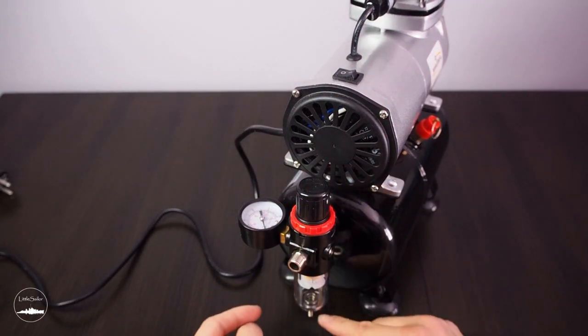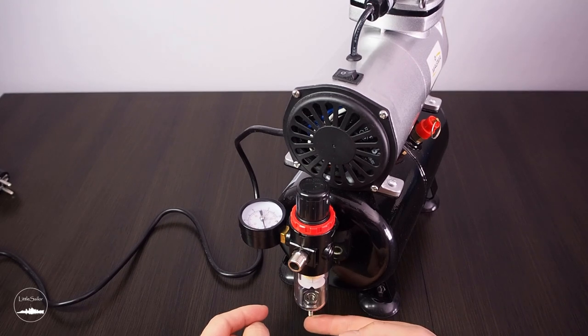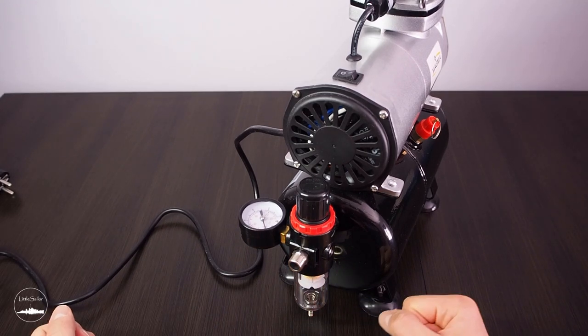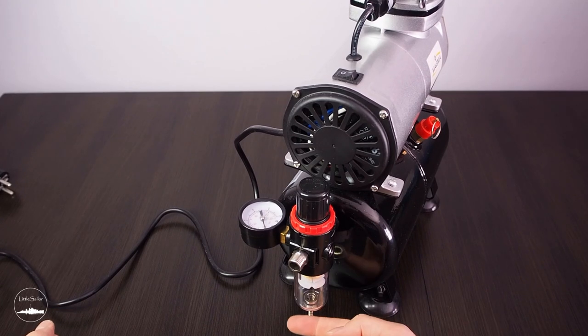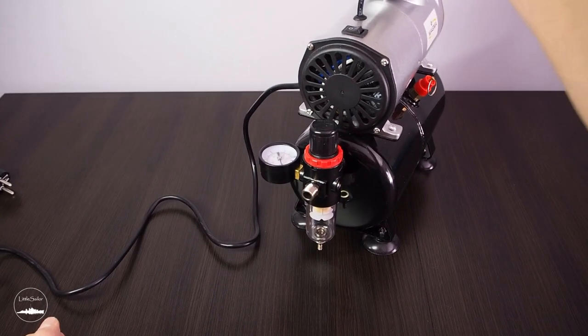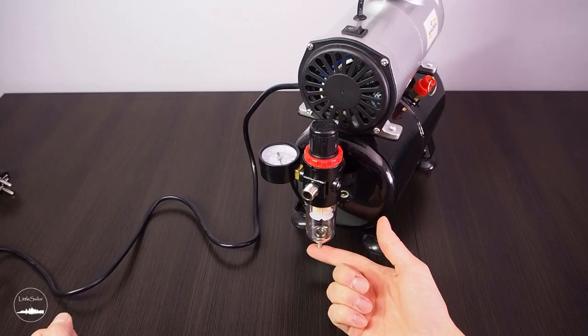This model already has a pressure regulator installed so we don't have to worry about its assembly. Under the regulator in a bowl sometimes there could be water. It's important to drain the water each time you finish working by pressing the valve on the bottom of the regulator bowl.